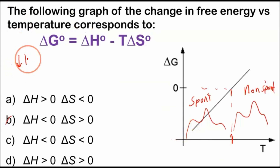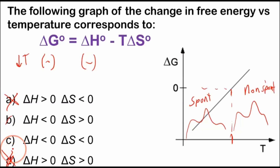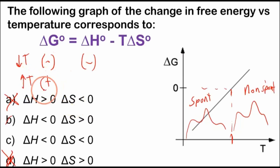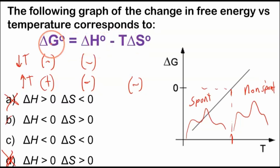We want to know the signs of ΔH and ΔS. At low temperature, ΔG is negative. If temperature is very low, the enthalpy term dominates, so if ΔG is negative then ΔH must be negative — that eliminates any answer with ΔH greater than zero. At high temperature, ΔG is positive. Since ΔH is negative, we need the minus T·ΔS term to become positive and large enough to dominate, which requires a negative change in entropy. So we need a negative ΔH and a negative ΔS.